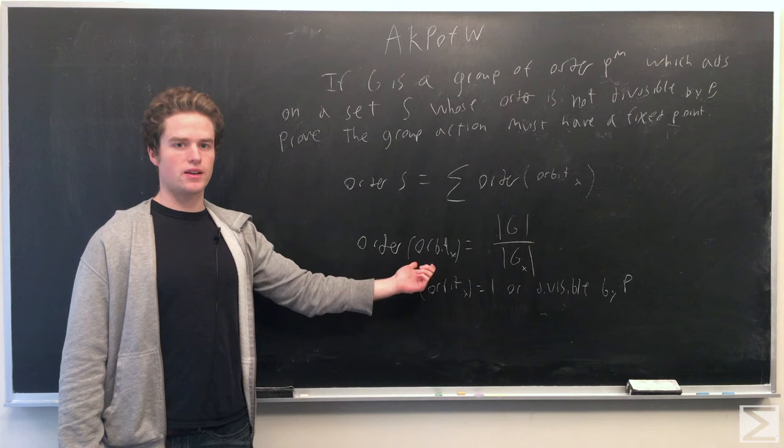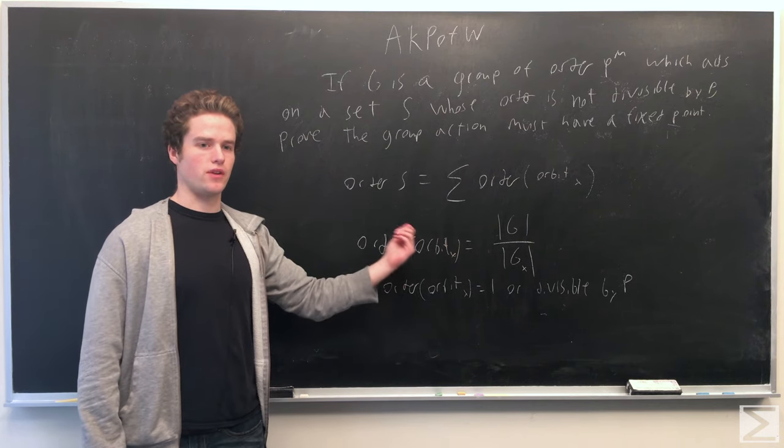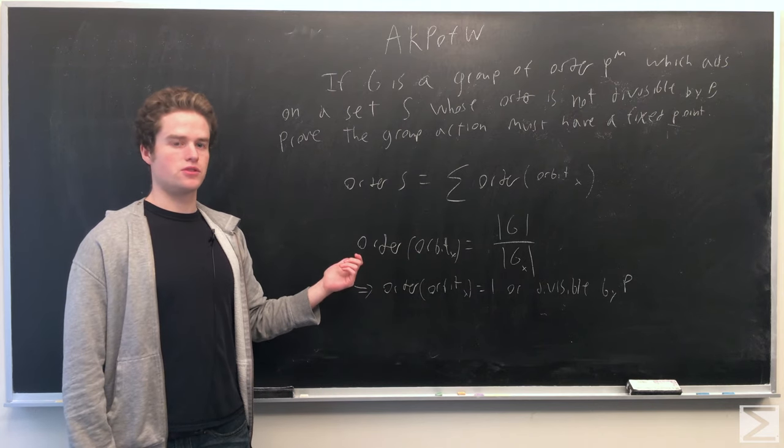And we also, when calculating the orbit of x, you can find the stabilizer of x of elements in G, such that g of x gives back x. And you know that these are a group in G.